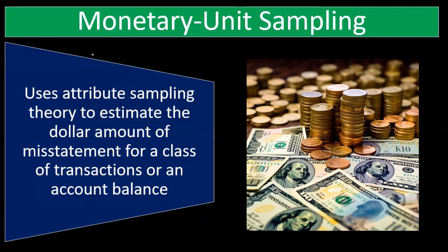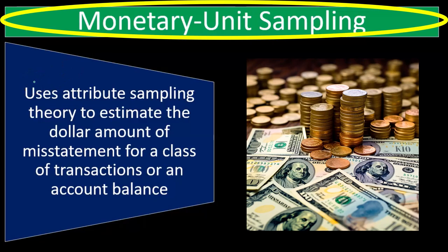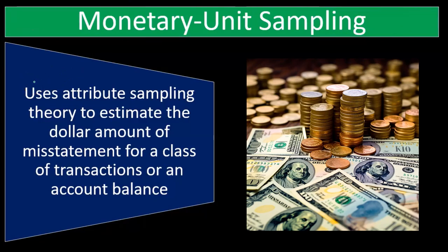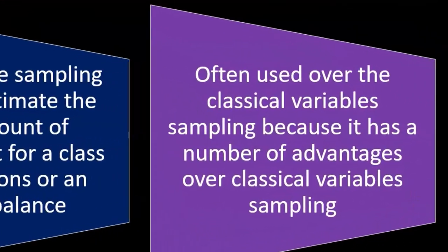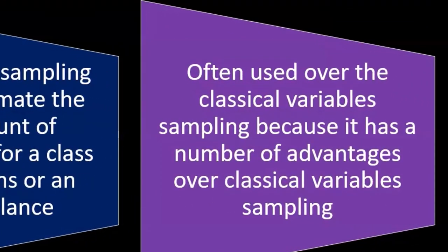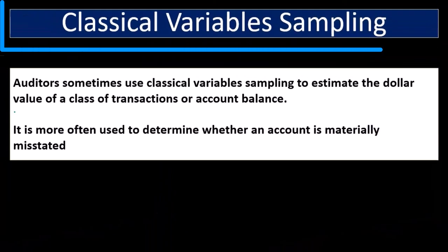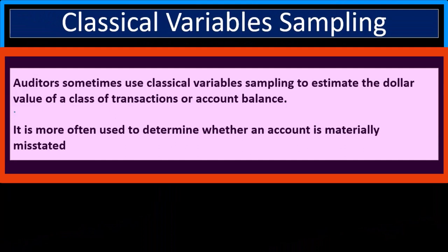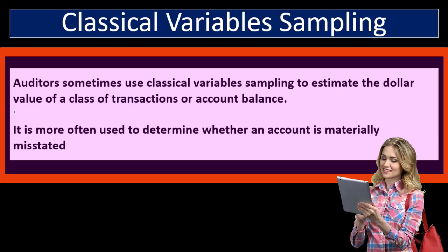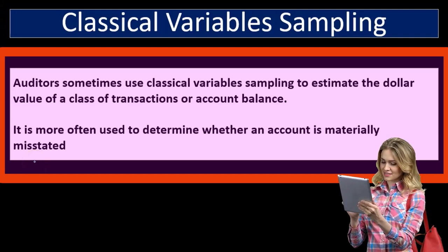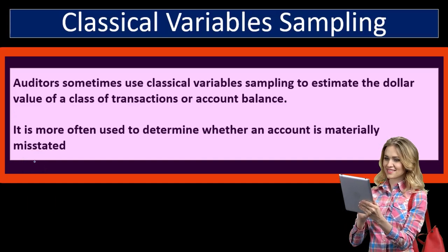Monetary unit sampling is another type of statistical sampling that uses attribute sampling theory to estimate the dollar amount of misstatement for a class of transactions or an account balance. It is often used over classical variable sampling because it has a number of advantages. Classical variables sampling is used by auditors to estimate the dollar value of a class of transactions or account balance, and is more often used to determine whether an account is materially misstated.